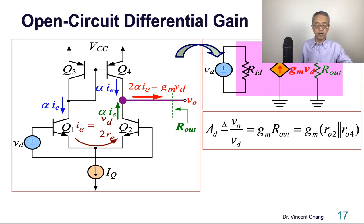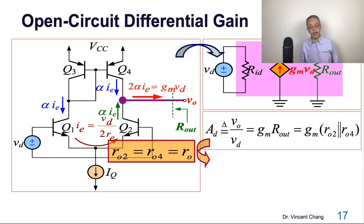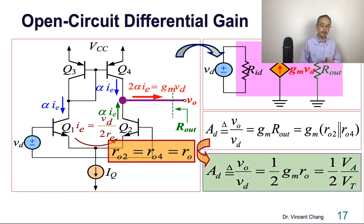The final answer is differential gain equals transconductance times the parallel combination of the two output resistance of the individual transistor O2, NPN, and O4, PNP. If the two output resistance are the same, if we assume the two output resistance are the same, R2 equals R4, then we can simplify this expression.